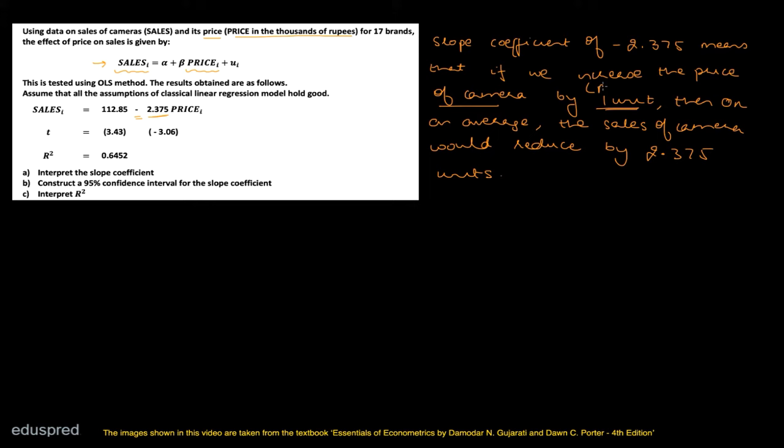Be really careful in the exam to write the proper units given in the question. So instead of 'one unit,' we write: if we increase the price of camera by Rs. 1000, then on an average, the sales of camera would reduce.